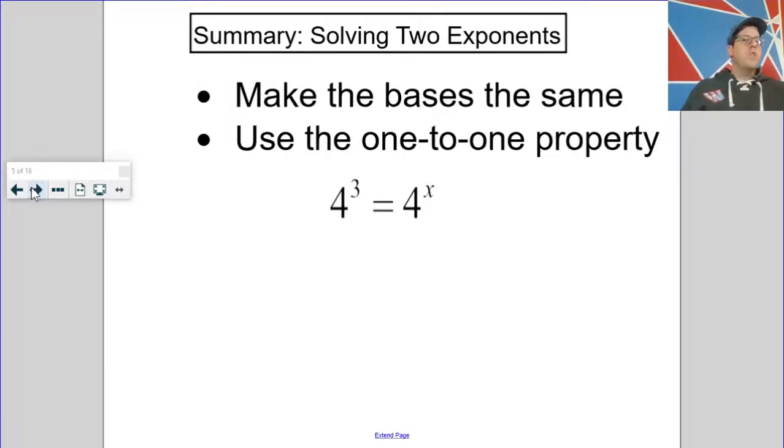All right, so if you want to use the 1 to 1 property for two exponents, you're going to make the bases the same. And then you're going to use that 1 to 1 property. So the goal is to make it the same base and then say, okay, now the exponents have to equal each other.